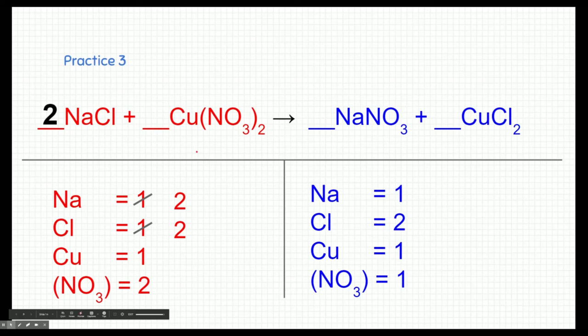Unfortunately, by adding that coefficient, I kind of messed up my sodium. So I'm going to go to the product side and fix my sodiums by adding a coefficient in front of sodium nitrate. That changes my sodiums to two, and it also changes my nitrate to two as well, because this two foils into both the sodium and the nitrate itself. And that actually was really helpful — it helped balance our reaction. This reaction now, with those coefficients, obeys the law of conservation of mass.